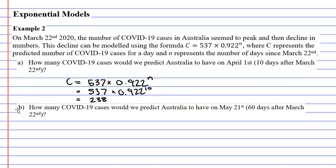Moving now on to question B, it says, how many COVID-19 cases would we predict Australia to have on May 21st? This is 60 days after March 22nd. So once again, we copy the formula down. C equals 537 times 0.922 to the power of N. And this time it's 60 days later. So N will be 60.